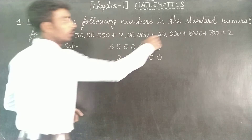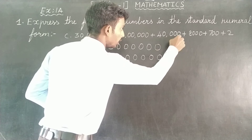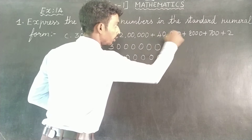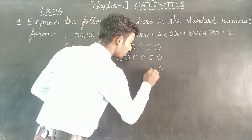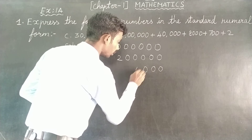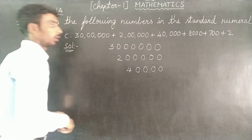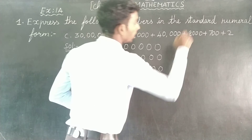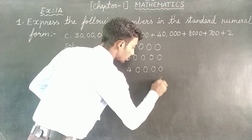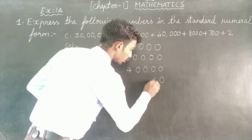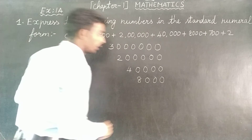Next is 40,000. So 40,000 — counting 1, 2, 3, 4 — then 4. Next, 8,000 — counting 1, 2, 3 — then 8.